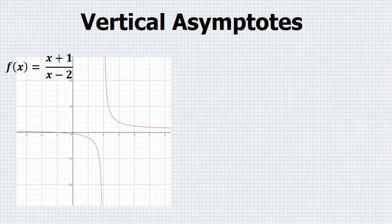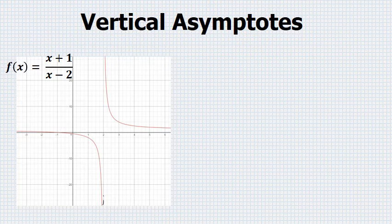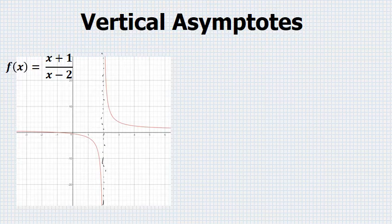A vertical asymptote occurs in the graph of f(x) = (x+1)/(x-2) at x = 2. It's a line that's technically not part of the graph of f(x) = (x+1)/(x-2), but it's a line that the graph will get closer and closer to from each side, but never quite touch.